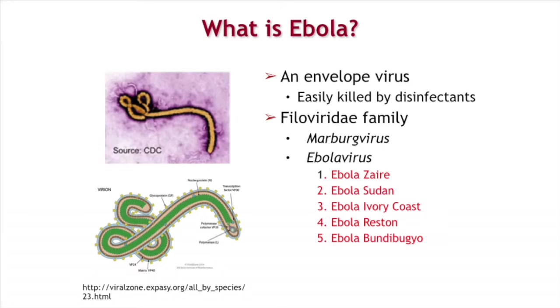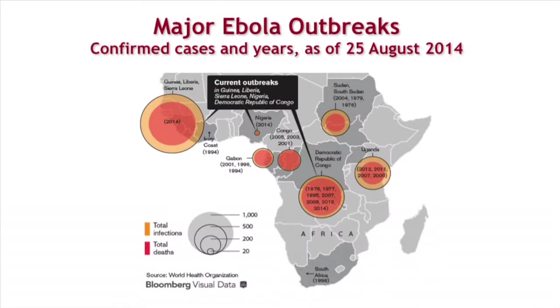The virus was first discovered in the Democratic Republic of Congo, what used to be called northern Zaire, near the Ebola River, which gave it its name, in 1976. At that time there were two practically simultaneous outbreaks in northern Zaire and southern Sudan. In the past four decades, there have been a number of outbreaks, mainly in Central Africa, which have resulted in 3,000 cases.